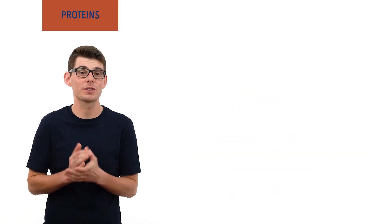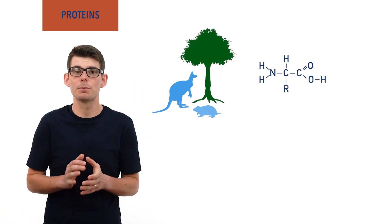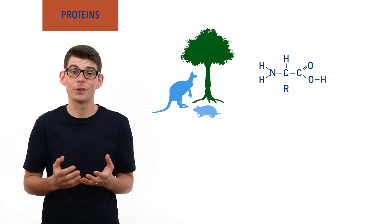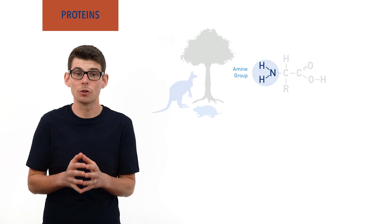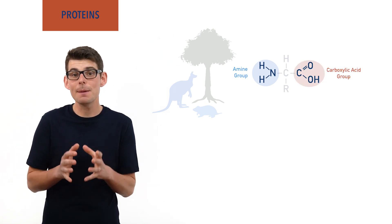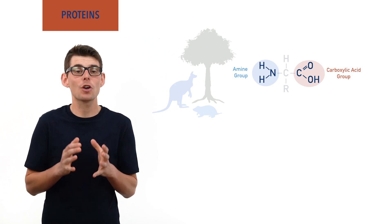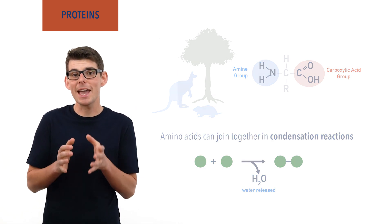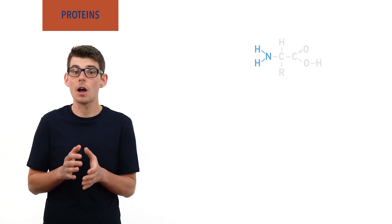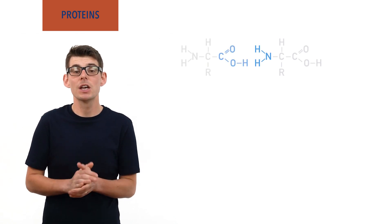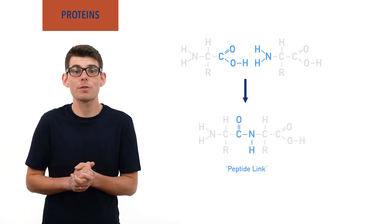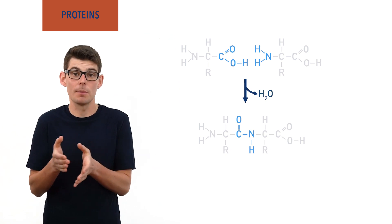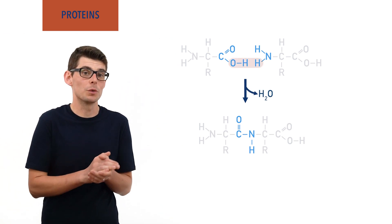Recap done? Let's go! Amino acids are the building blocks of life. They are used by living organisms to produce hundreds of thousands of different compounds. This is because amino acids have an amine group and a carboxylic acid group, enabling them to bond to other amino acids in condensation reactions. The amine group of one amino acid can react with the carboxylic acid group from another amino acid, forming what is called a peptide link. A water molecule is released in the process, coming from the OH in the carboxylic acid and a hydrogen from the NH2 amine group.